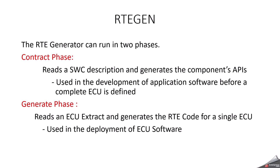Now we can discuss what is the RTE generation phase. The RTE generator can run in two phases: one is the contract phase, and another one is the generation phase. In the contract phase, we only consider the software component description file as input. It reads the software component description file and generates the component APIs. The output of the contract phase is only the header file of the particular software component. In the generation phase, we read all the ECU extract and system descriptor files. Using those files, we generate the RTE code for a single ECU, considering all the ECU extract, system extract, flat view files, and we generate the equivalent header, source, and related ARXML files too.